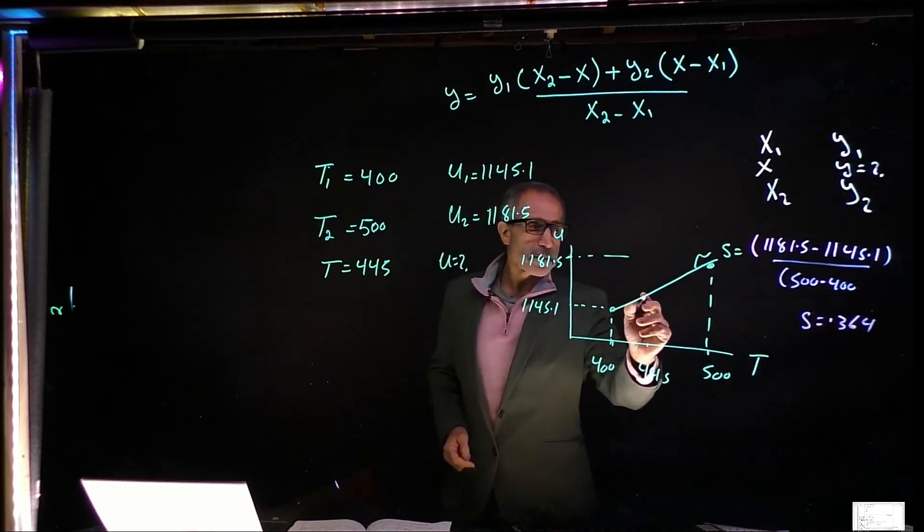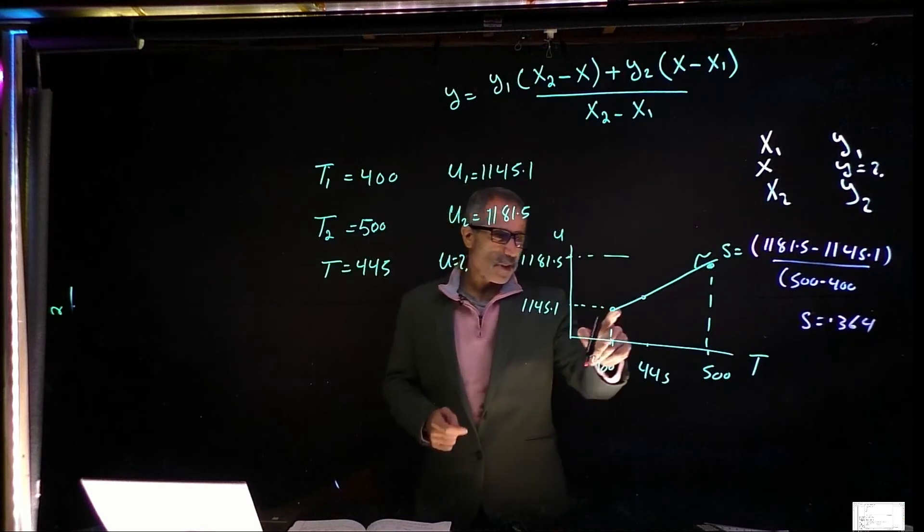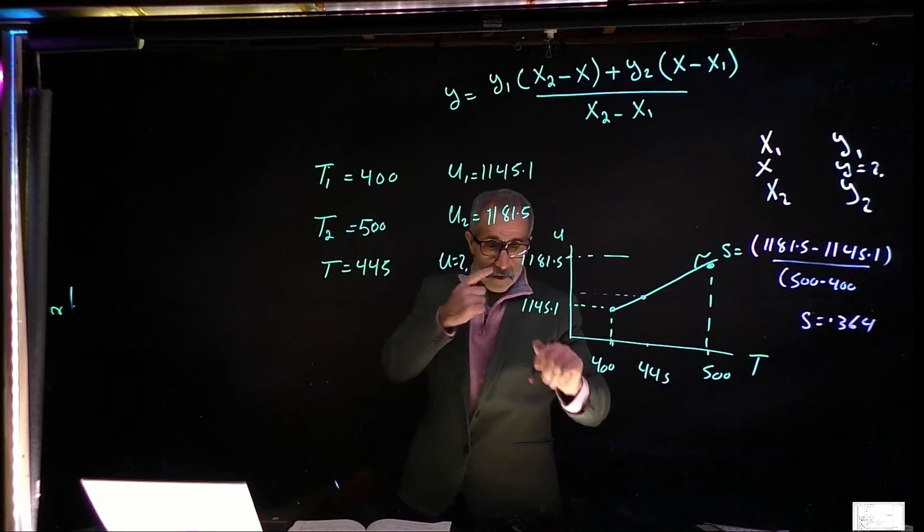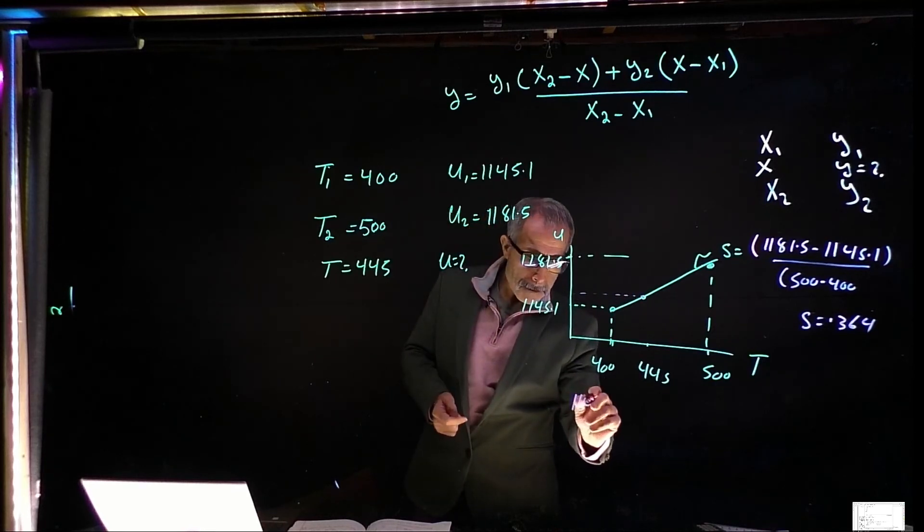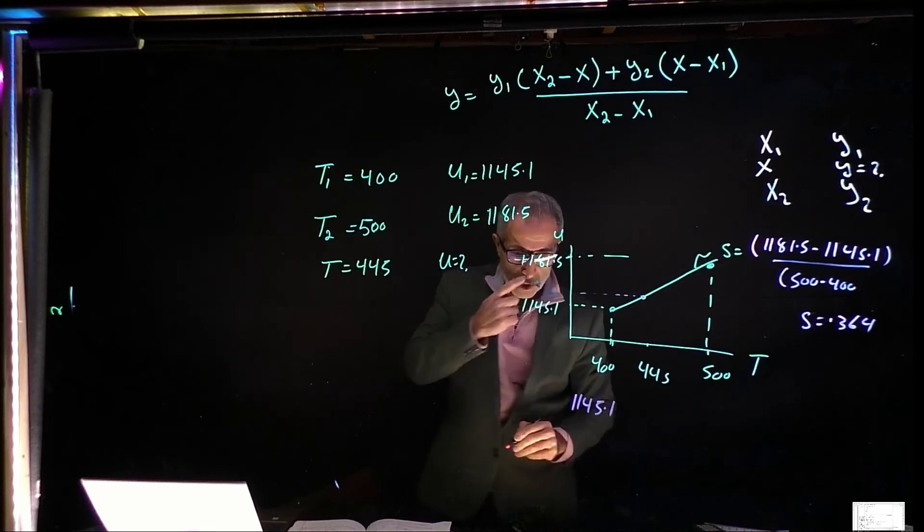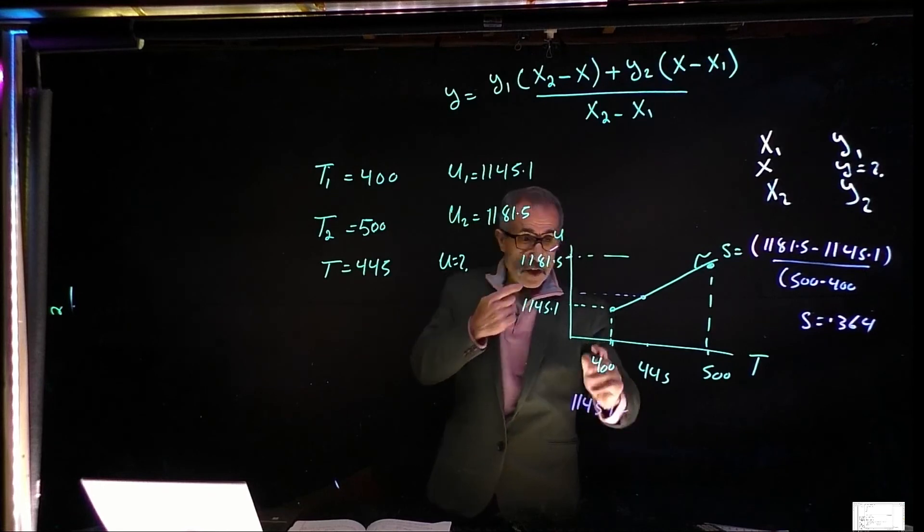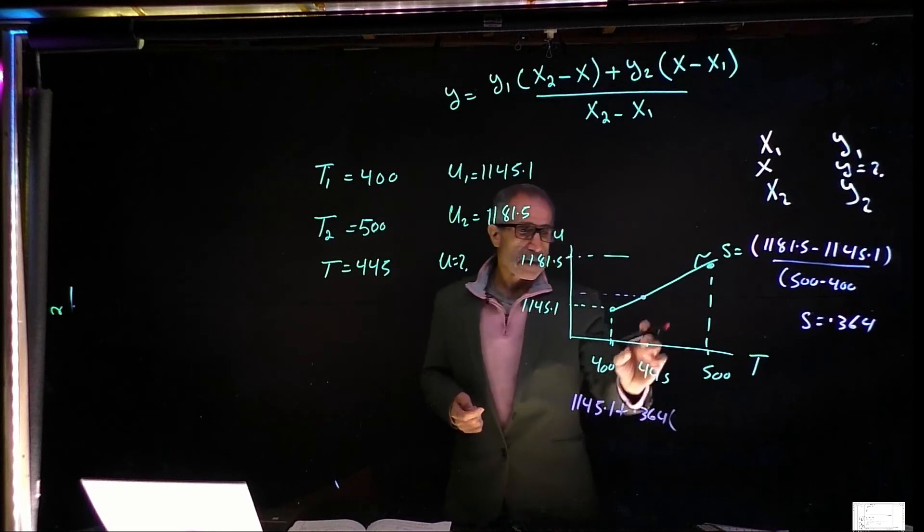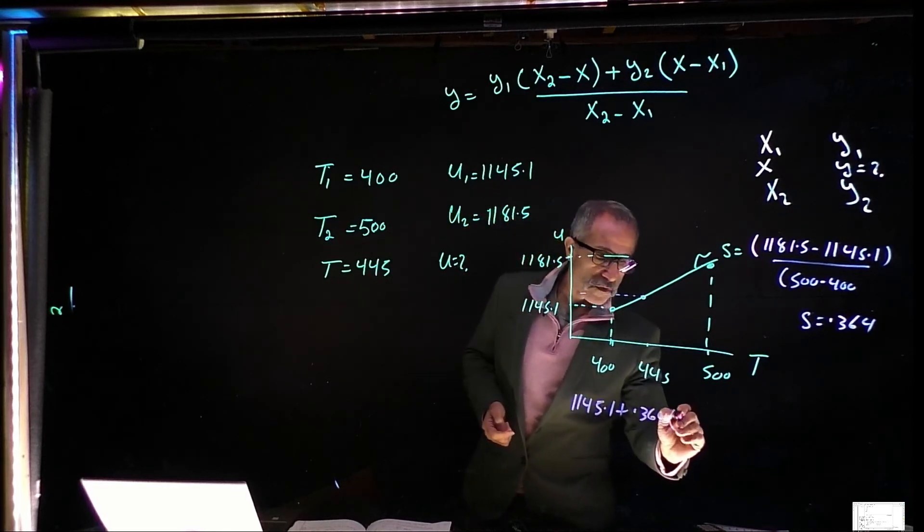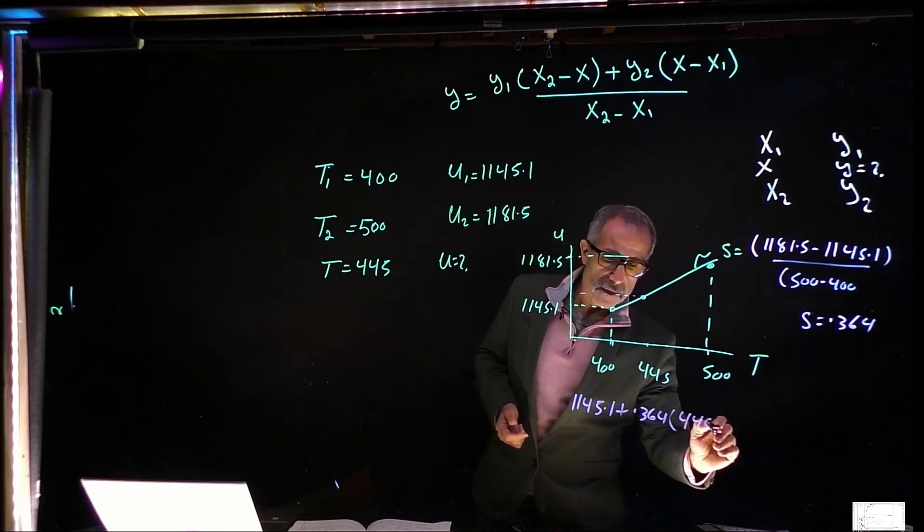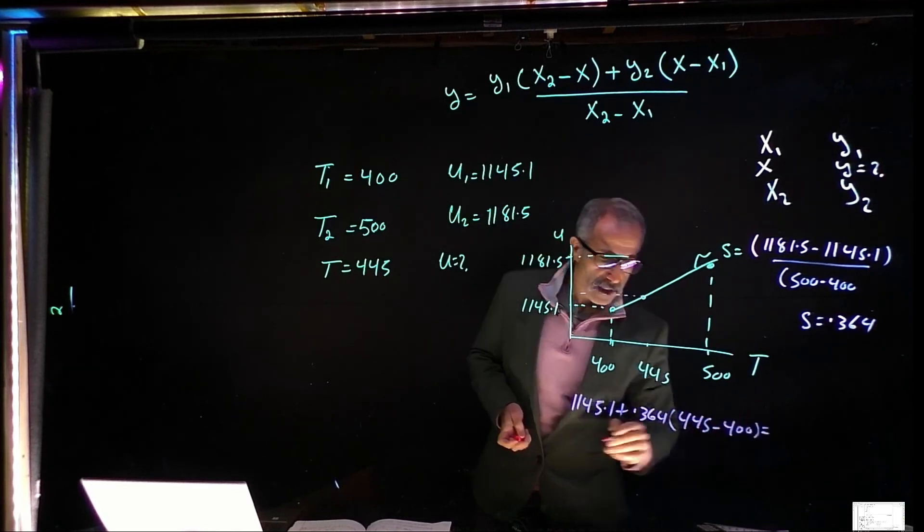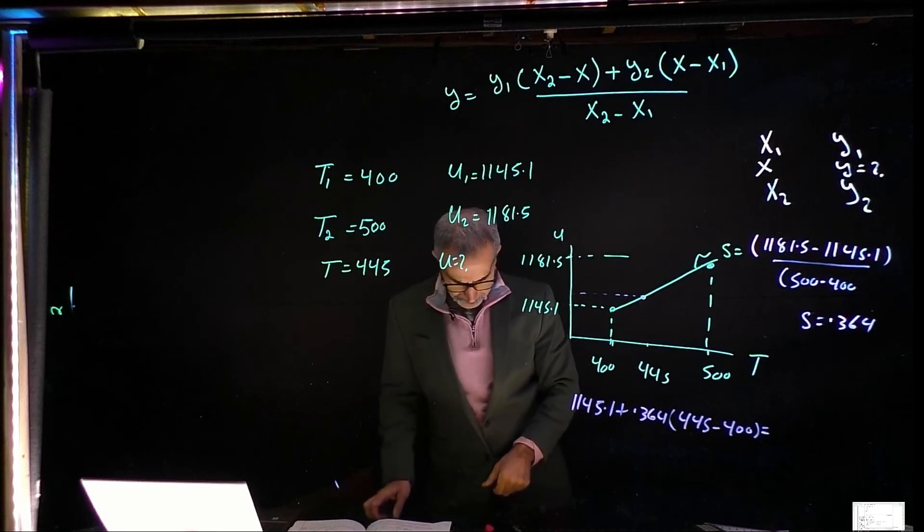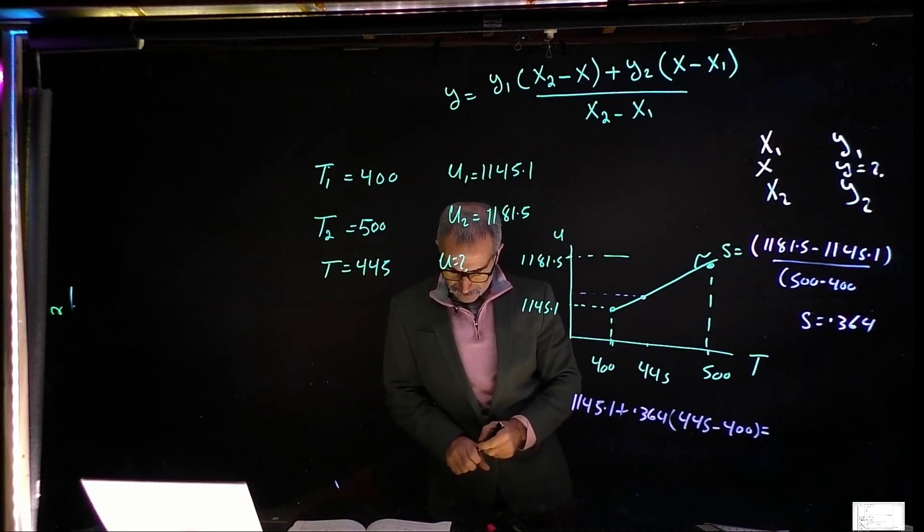So if I want to know what this point is, basically, I'm going to go ahead and say, okay, it is right here. So it's 1145.1 plus, it's going up, my slope is 0.364. And it's going up at the distance between these two, which is 445 minus 400. And that comes out to 1161.5.